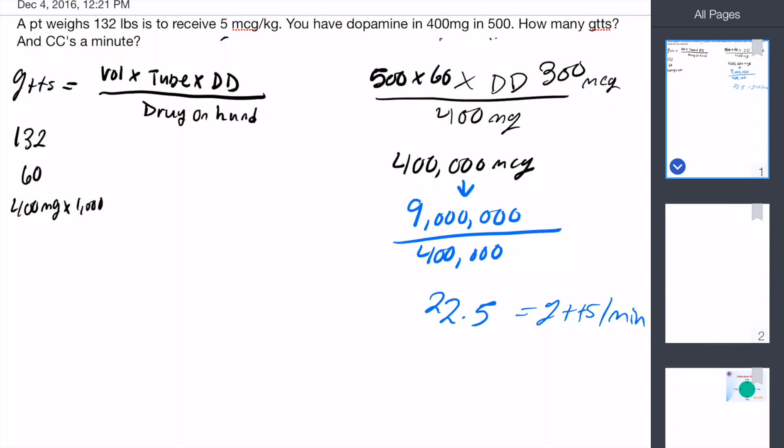Now to convert that into how many cc's, well we do know that for a 60 drop, each 60 drops equals 1 cc. So we're only going 22.5 drops a minute, so it's easy. We divide that by 60 and that gives us 0.375 cc's a minute.